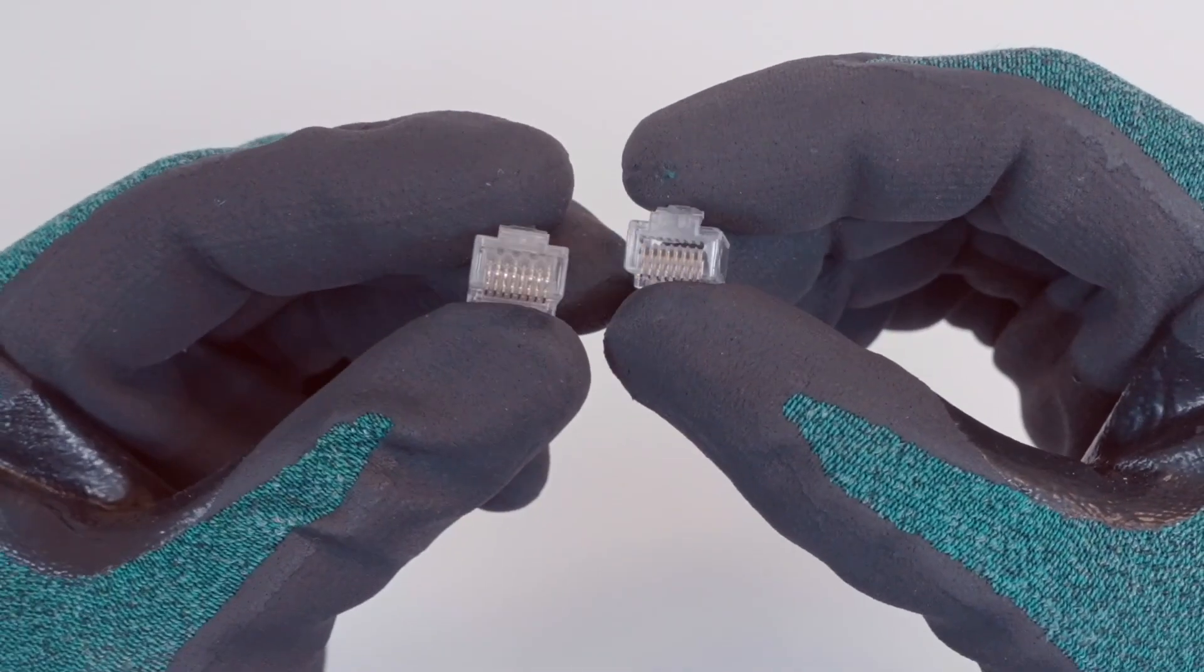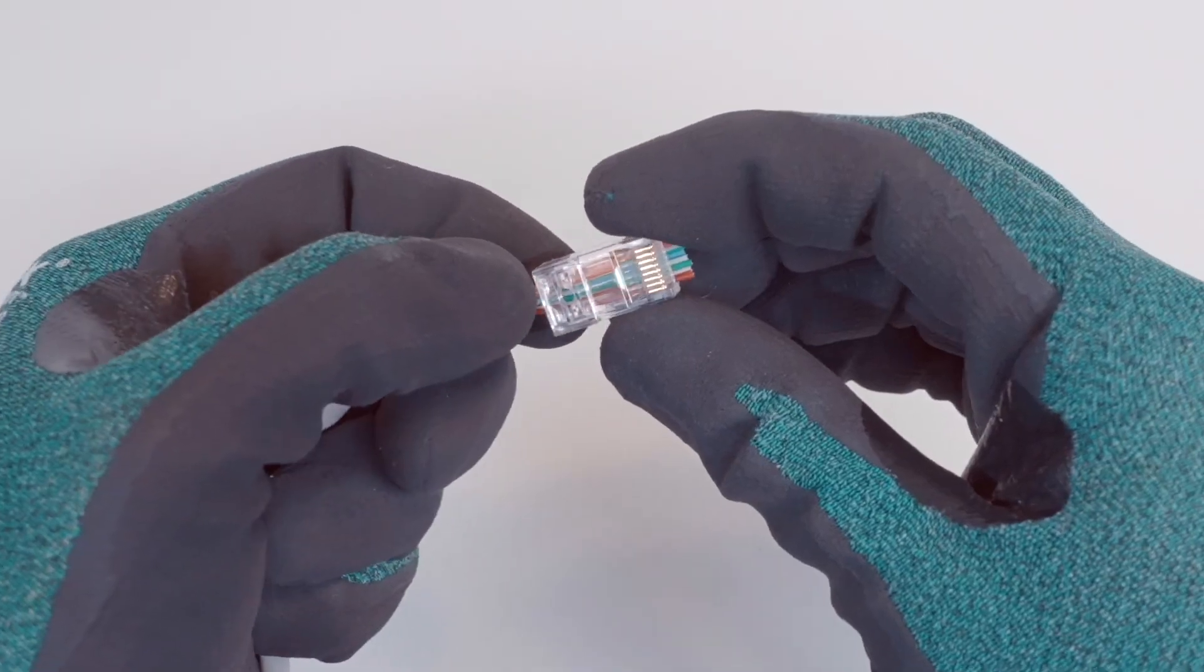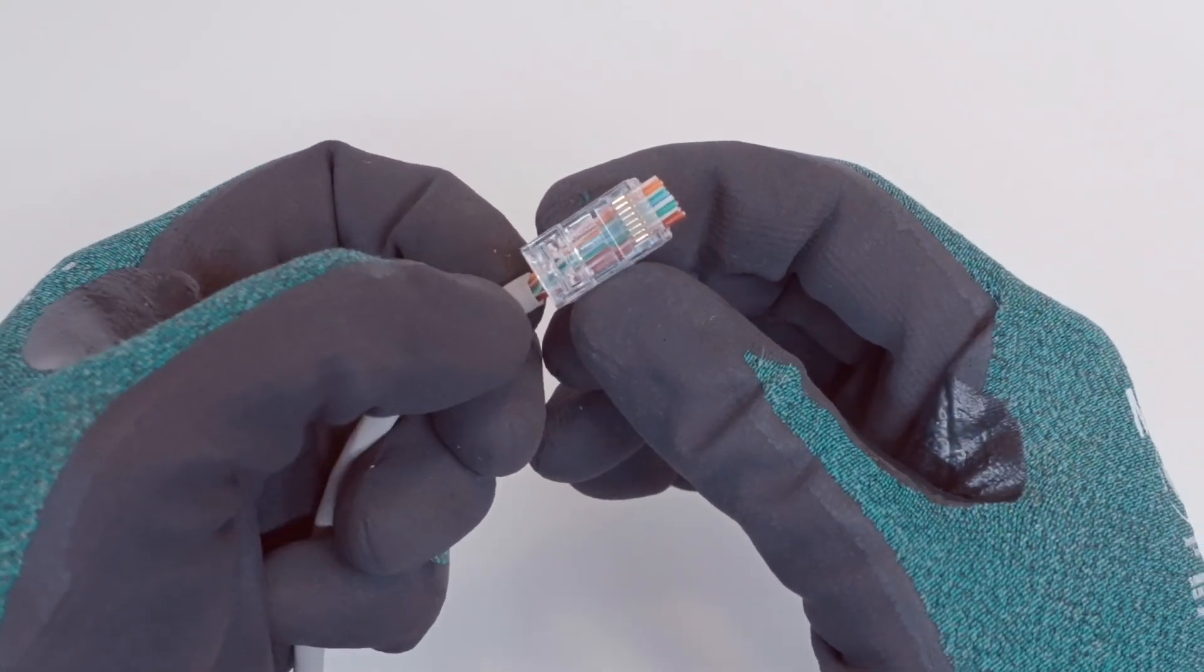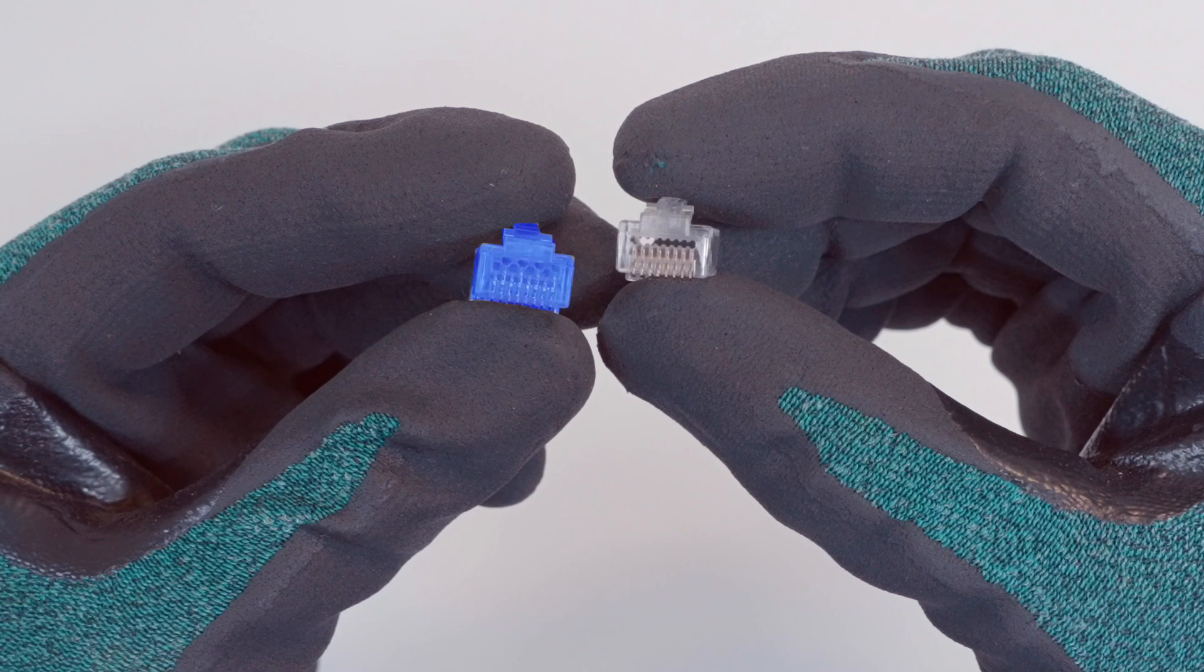RJ45 plugs come in two primary types. Pass-through plugs, which are used in this video, allow the wires to extend through the plug, making assembly easier. Standard plugs, where the wire stops at the end of the plug, require a more precise cut before crimping.